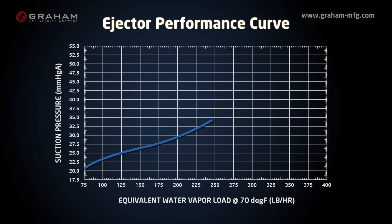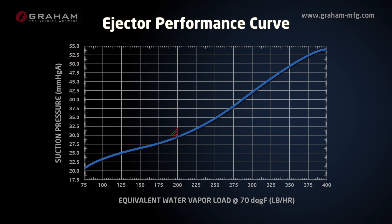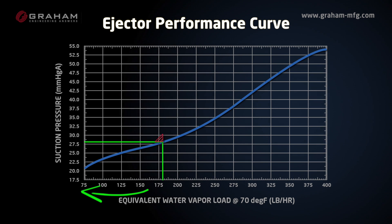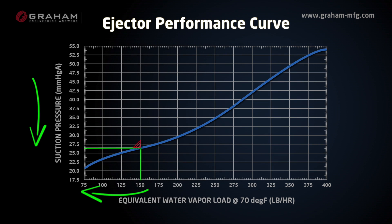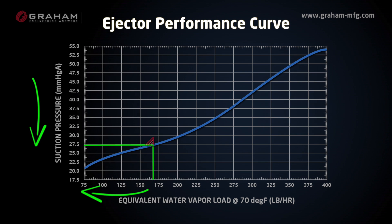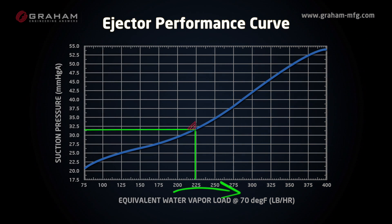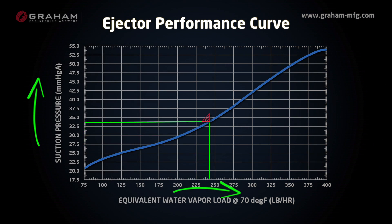This should correspond to our performance curve. If we look at the operating point on the curve, we can see that as we move along the curve and the suction load decreases, the corresponding suction pressure decreases as well. When the suction load is increased, the suction pressure increases accordingly based on the ejector's specific performance curve.